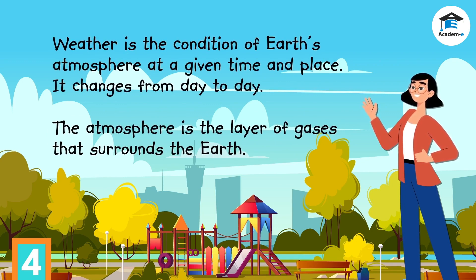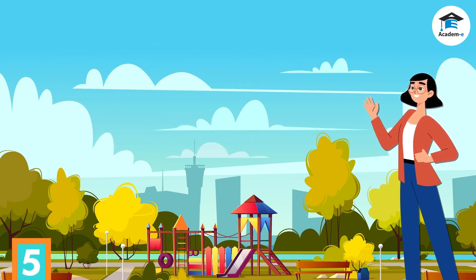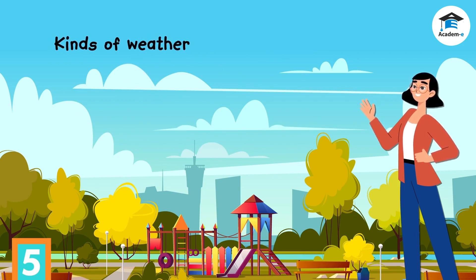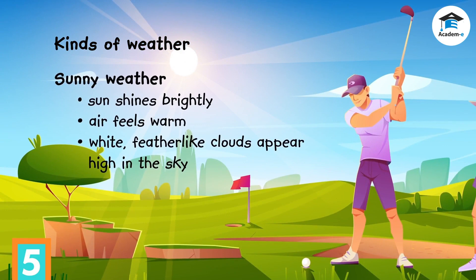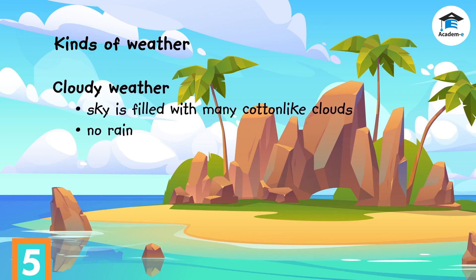The atmosphere is the layer of gases that surrounds the Earth. Now let's recall the different kinds of weather and describe them one by one. On a sunny weather, the sun shines brightly and the air feels warm. White, feather-like clouds appear high in the sky — a sunny weather is a fine weather. On a cloudy weather, the sky is filled with many cotton-like clouds, but there is no rain. A cloudy weather is a fair weather.